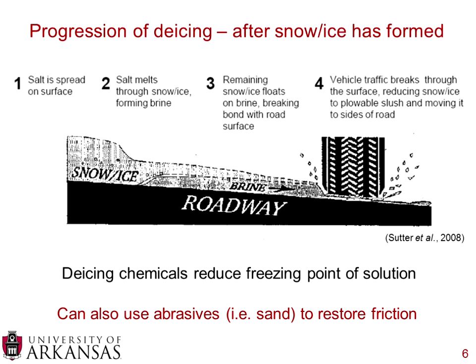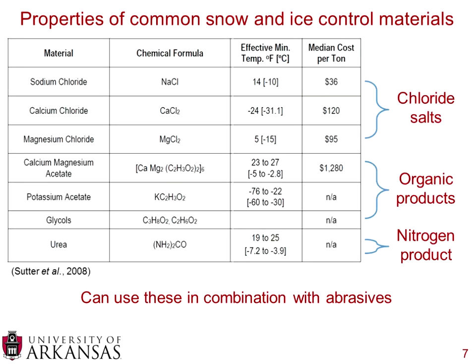With an anti-icing strategy, you never get accumulation of snow or ice — you immediately get a brine solution when precipitation hits the roadway, skipping directly to the final step. You can also use abrasives like sand to restore friction. Instead of creating a brine solution, you place abrasive material on top of the snow or ice to help restore some friction. These approaches are not mutually exclusive.